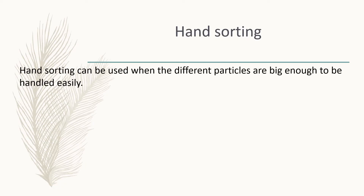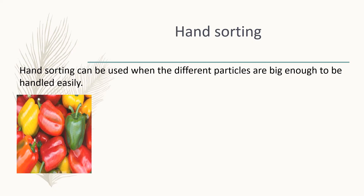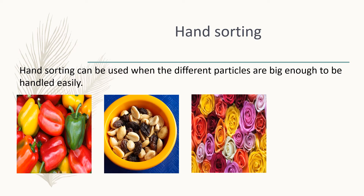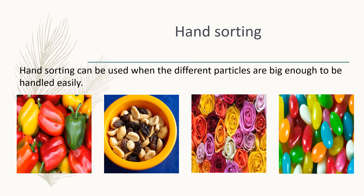What we will be looking at now is the methods of physical separation. The first one is hand sorting. Hand sorting can be used when the different particles are big enough to be handled easily. The particles can be picked up one by one and separated from each other. Examples include a bunch of peppers, raisins and peanuts, different roses, or something we all like — jelly beans.